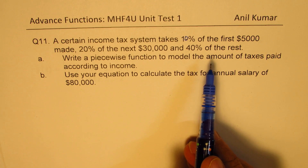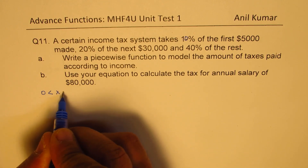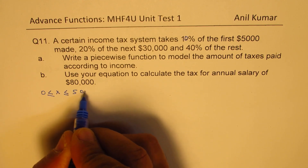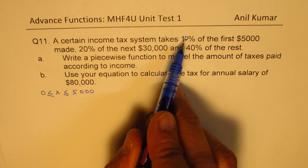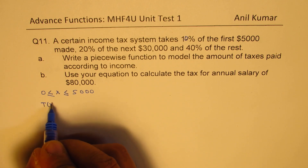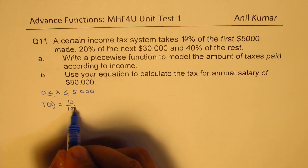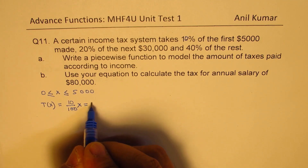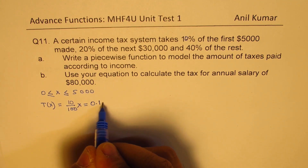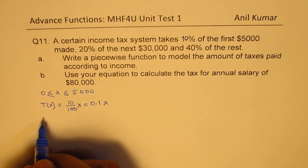So there are three slabs. When the value of x is between 0 and less than or equal to 5,000, the tax rate T(x) is only 10%, which means 10 over 100 of the x value. So we can write this as 0.1x. That is the first interval.